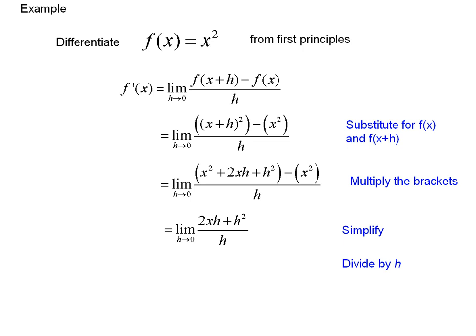Next step is dividing by h. 2xh divided by h is 2x, and h squared divided by h is h. Now we're going to apply the limit — make h equal to 0. 2x just stays the same, and this is plus 0, so the answer is 2x. Now we can use that derivative to work out the gradient of the tangent and all sorts of other things.